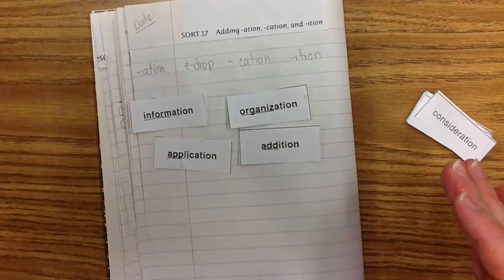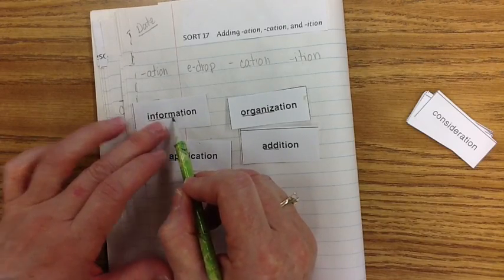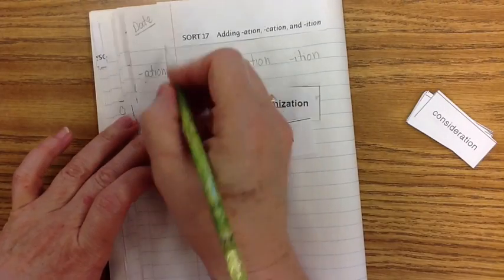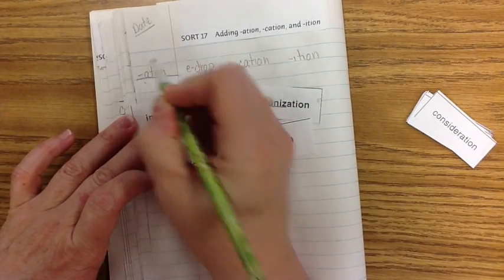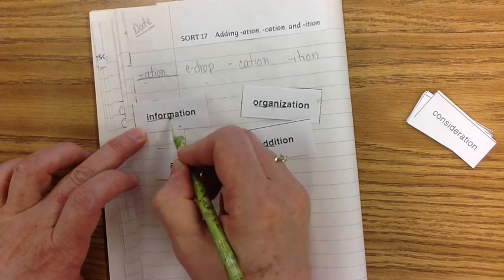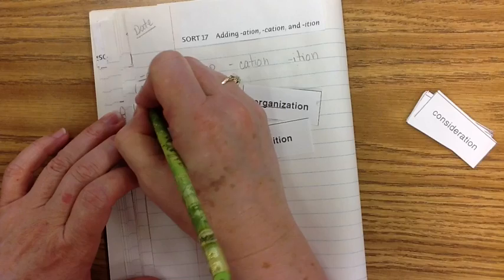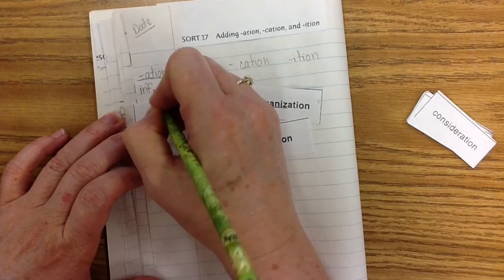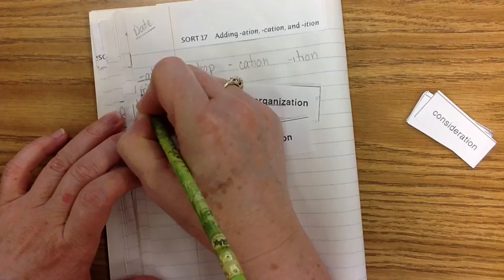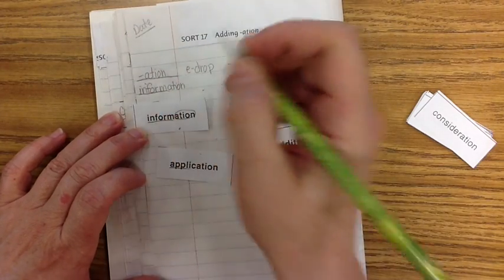Let's talk about what's changing. If we have inform, we don't have to change anything. We just add A-T-I-O-N. So inform, I-N-F-O-R-M-A-T-I-O-N. We're adding A-T-I-O-N. So inform, I-N-F-O-R-M. That's the base word, so underline it. Then we add the A-T-I-O-N.